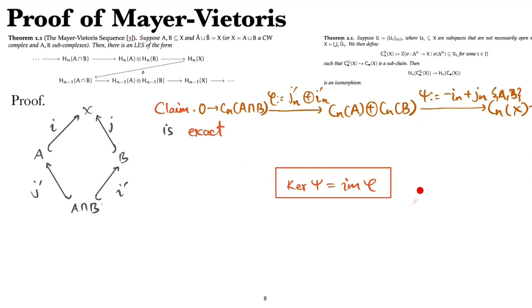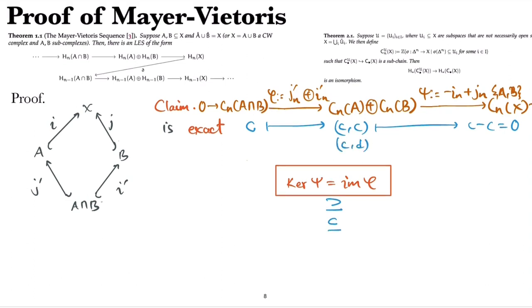Now in order to see this exactness, the first inclusion here, we do the reverse direction because anything from C, the image of it, goes to C, C. So this is what the image looks like, but this is taken to C minus C, which is zero. So that part is easy. The other inclusion: if sum C, D, this pair is taken to D minus C, and D minus C equals zero, then D equals C. So the chains are equal. So this chain is in A and is in B. Therefore, this chain, C equals D, must be in C and A intersection B as well.